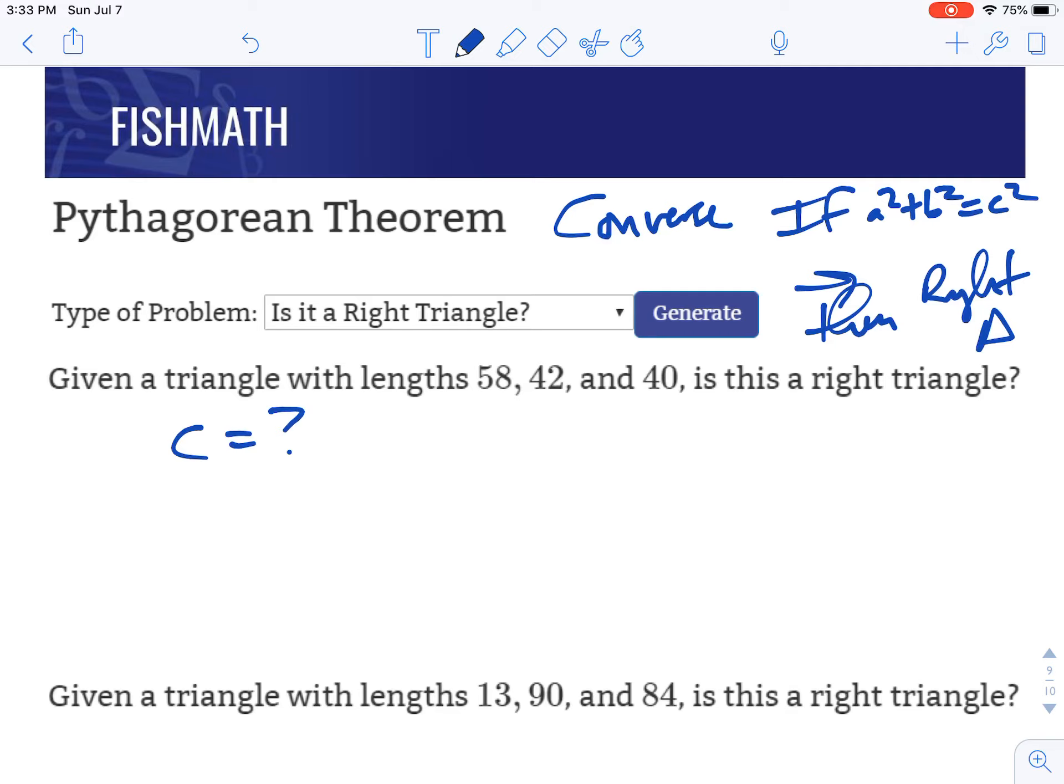c has to be the largest number. So c in this case has to be 58, even though it's the first number that we're given. a and b can be either or. That can be a, that can be b, or flip-flopped. It doesn't matter.